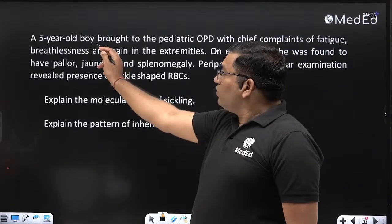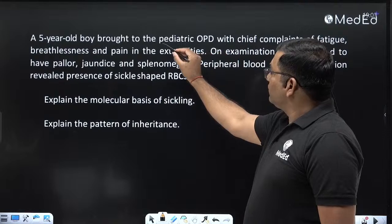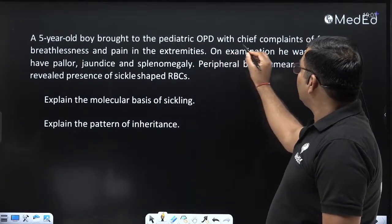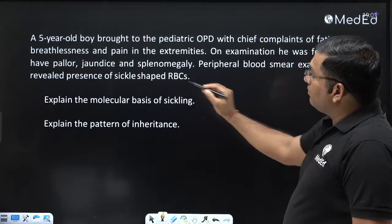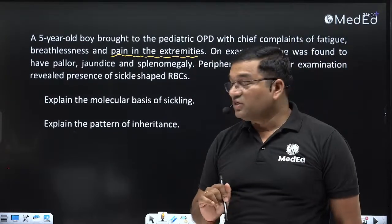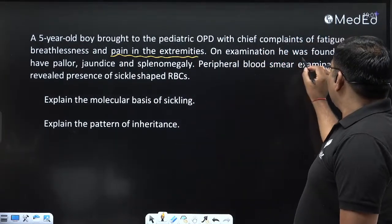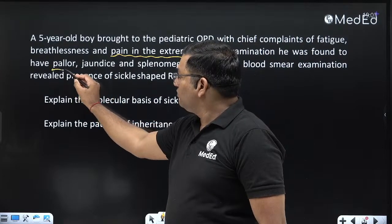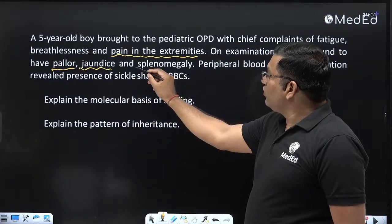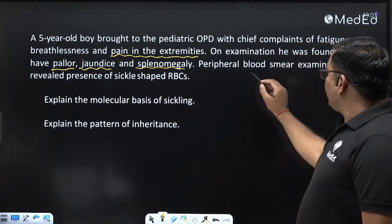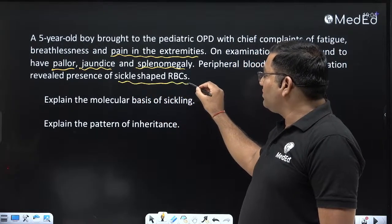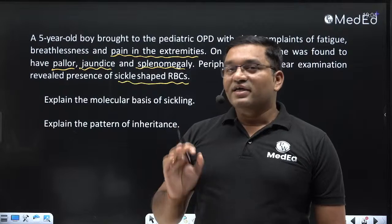A 5-year-old boy was brought to the pediatric OPD with chief complaints of fatigue, breathlessness, and pain in the extremities. On examination, he was found to have pallor (decreased hemoglobin), jaundice (yellowish discoloration of sclera and skin), and splenomegaly (enlargement of the spleen). Peripheral blood smear examination revealed the presence of sickle-shaped RBCs — this is a hint for the diagnosis.